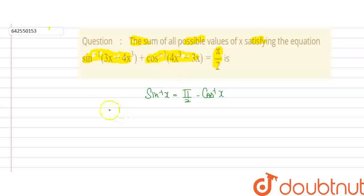So I will write the equation for you. This is sin⁻¹(3x - 4x³) which will be equal to π/2 - cos⁻¹(4x³ - 3x).